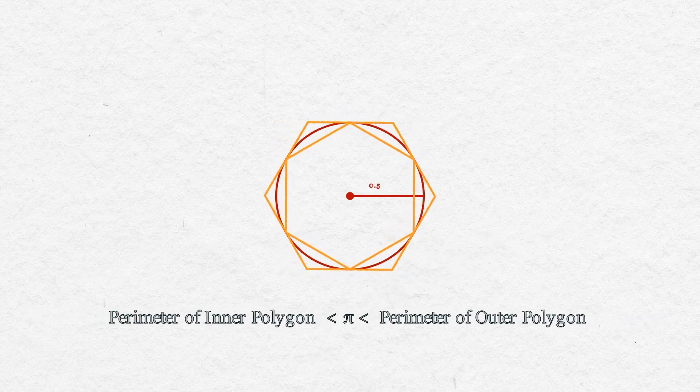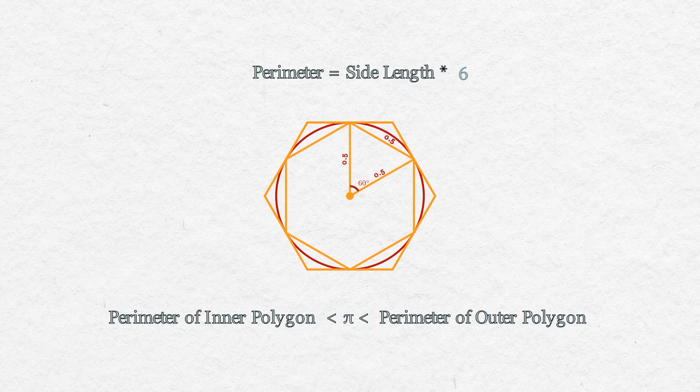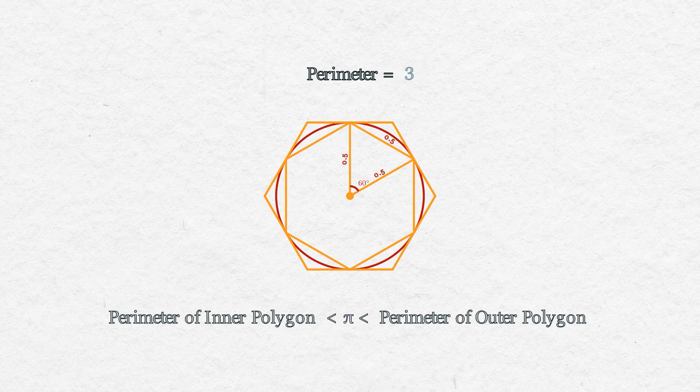The polygons he used were hexagons, as they were well researched at the time. Calculating the perimeter of the inner hexagon was easy. We can divide it into equilateral triangles, meaning the length of the side would be equal to the radius. Hence the perimeter would be 3.